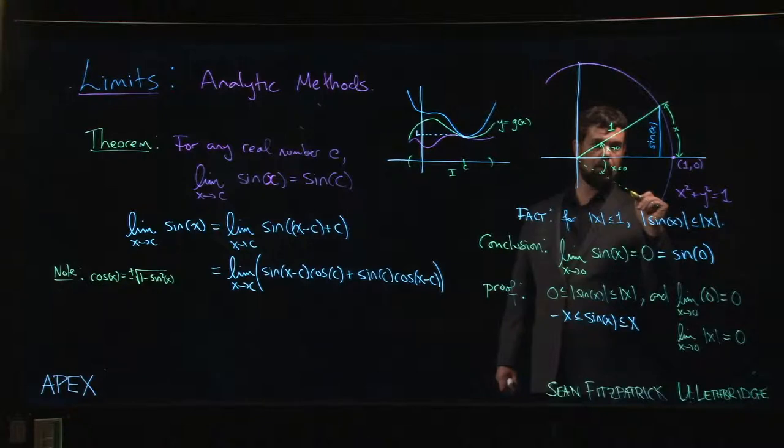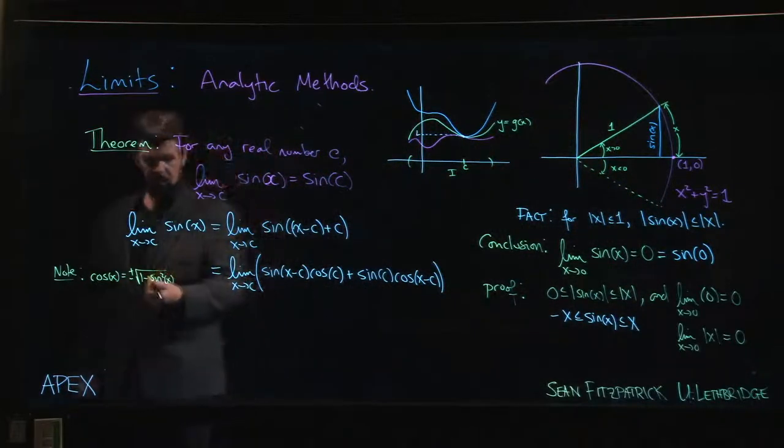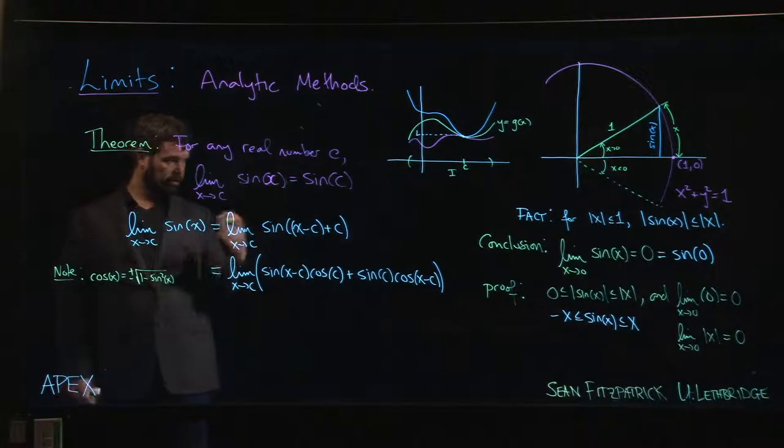And so in particular, we know that if we're close to 0, cosine is positive. Cosine is positive in these two quadrants. So if x is close to 0, we know that sine x is close to 0.